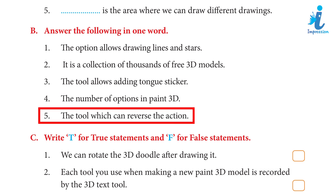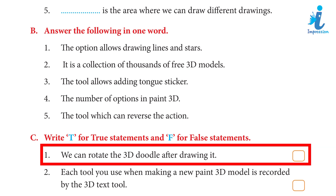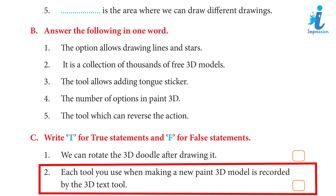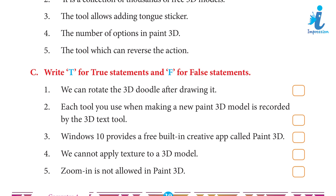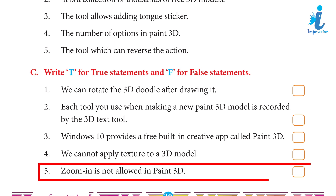5. The tool which can reverse the action. Answer: History tool. Write T for true statements and F for false statements: 1. We can rotate the 3D Doodle after drawing it. Answer: True. 2. Each tool you use when making a new Paint 3D model is recorded by the 3D text tool. Answer: False. 3. Windows 10 provides a pre-built in creative app called Paint 3D. Answer: True. 4. We cannot apply texture to a 3D model. Answer: True. 5. Zoom in is not allowed in Paint 3D. Answer: False.